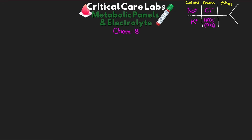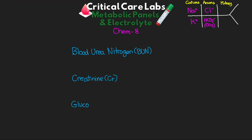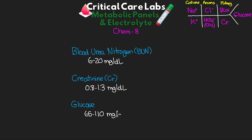From here we'll talk about the remaining tests in our CHEM-8: blood urea nitrogen or BUN, creatinine, and glucose. Back to our result skeleton, our BUN and creatinine are kidney function, and glucose is off to the side. I'll just cover normal values here: BUN normal is 6 to 20 mg per deciliter; creatinine normal is 0.8 to 1.3 mg per deciliter; and glucose normal is 65 to 110 mg per deciliter. Those conclude the eight tests that make up our CHEM-8 and our BMP.